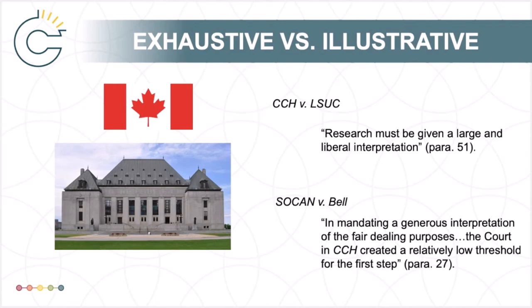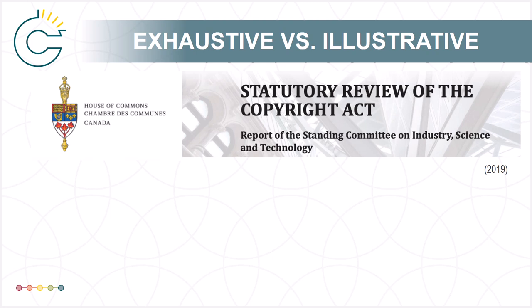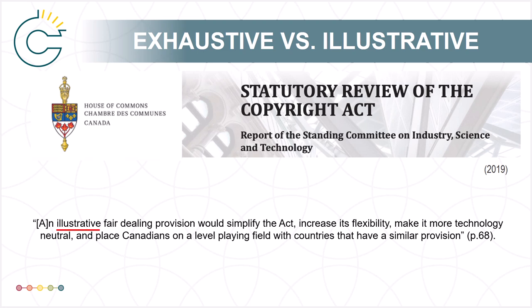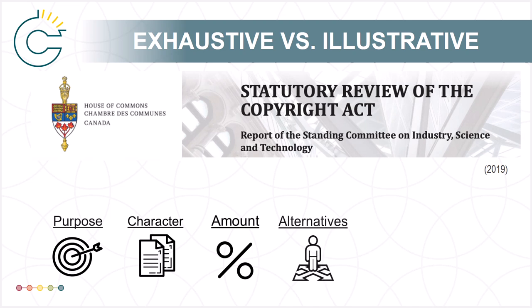There has been some debate about whether the Canadian Fair Dealing list could be improved by making the list illustrative rather than exhaustive. Debate over an illustrative versus exhaustive list was an important point of discussion in the statutory review of the Canadian Copyright Act. While there were both proponents and critics of moving to an illustrative list, the House of Commons Standing Committee on Industry, Science and Technology ultimately recommended amending the Copyright Act to have an illustrative list. The committee felt that such an approach would allow for a broader range of purposes — such as pastiche, informational analysis, and video game streaming — to be considered as Fair Dealing purposes. The committee also noted that the purpose of the dealing is only one of the six factors introduced by the Supreme Court in CCH for determining whether a dealing is fair.